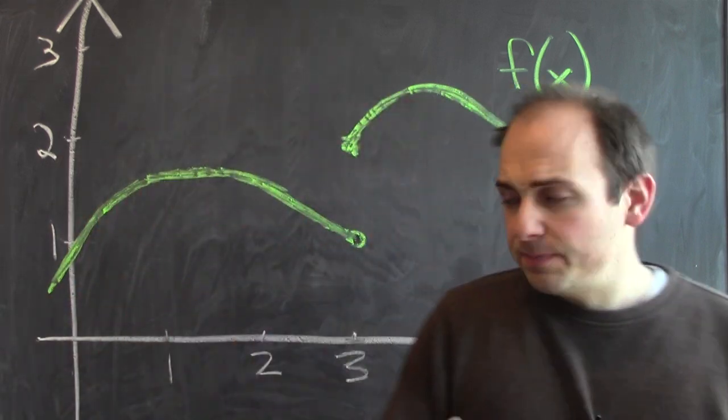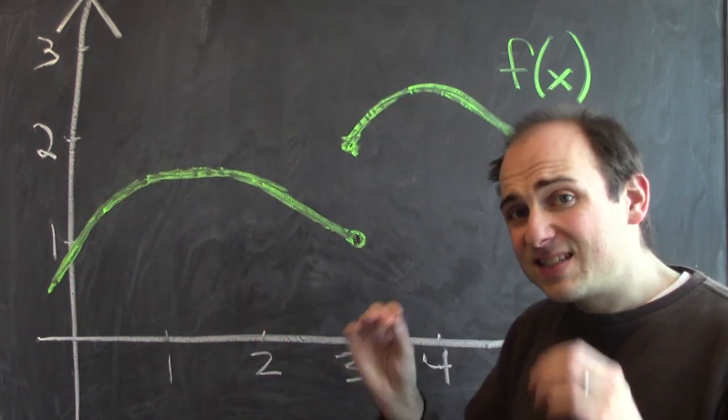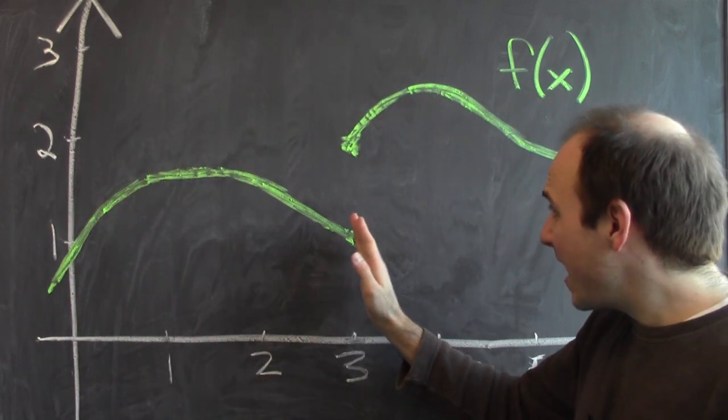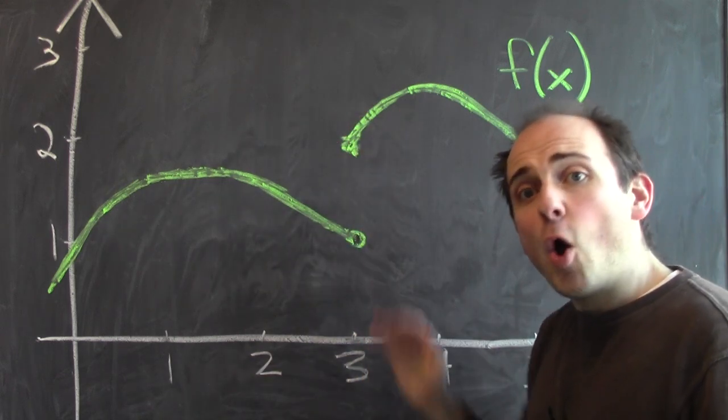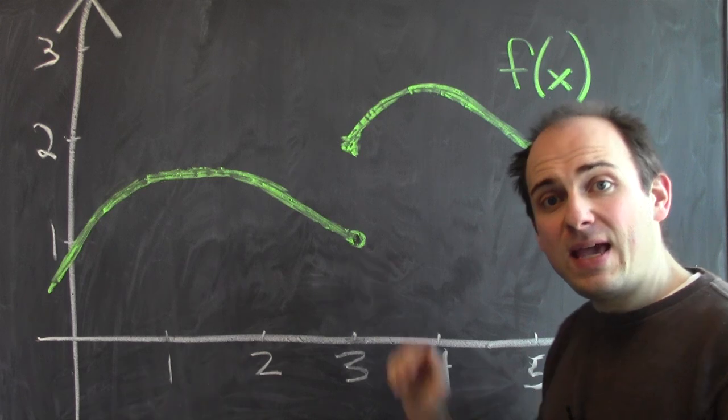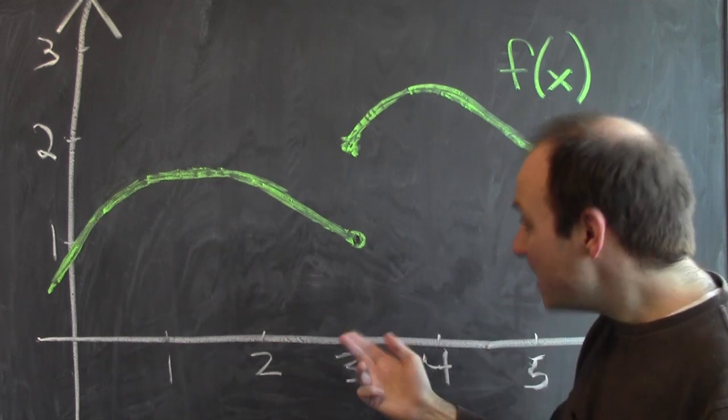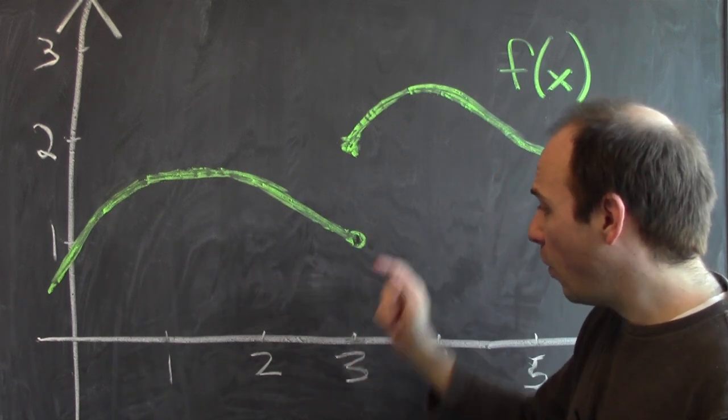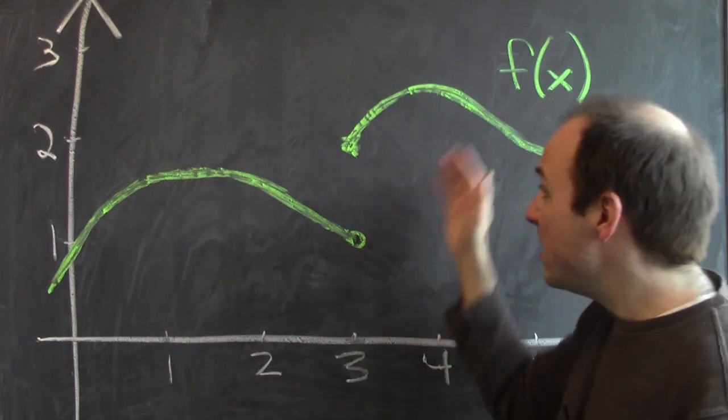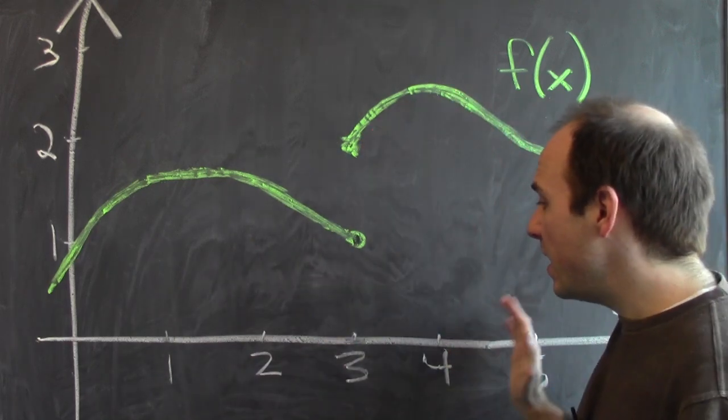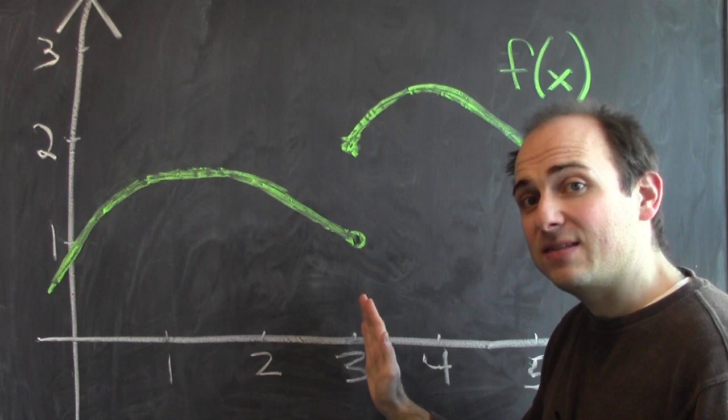So in this case, the two-sided limit doesn't exist. I can't say that f of x is getting close to anything if all I know is that x is close to 3. But the left and the right-hand limits do exist. I can say that f of x is getting close to 1 if x approaches 3 from the left-hand side, and I can say that f of x is getting close to 2 if x approaches 3 from the right-hand side.